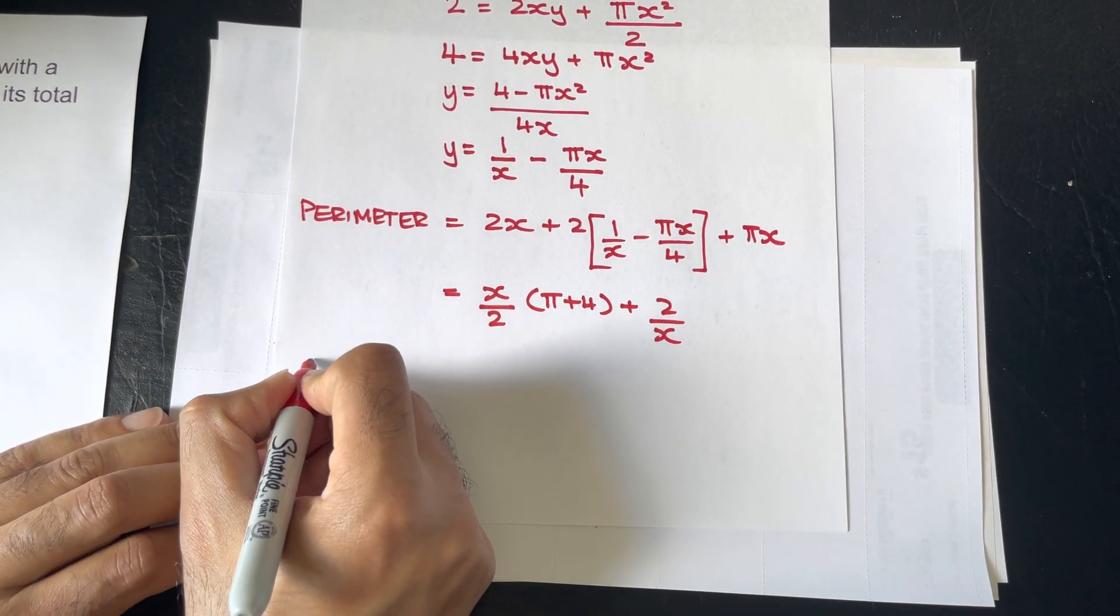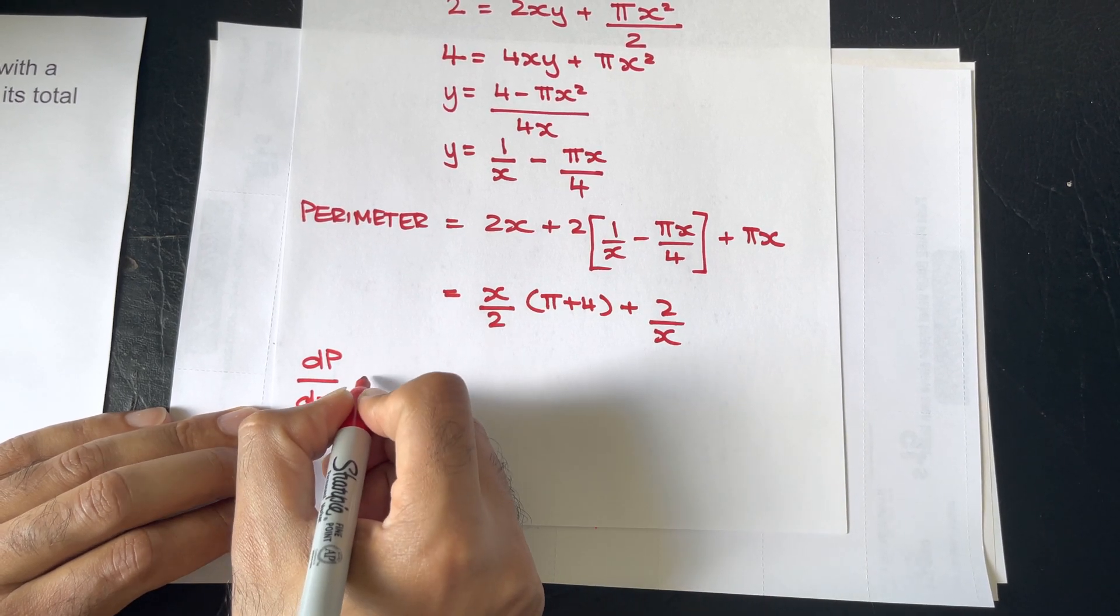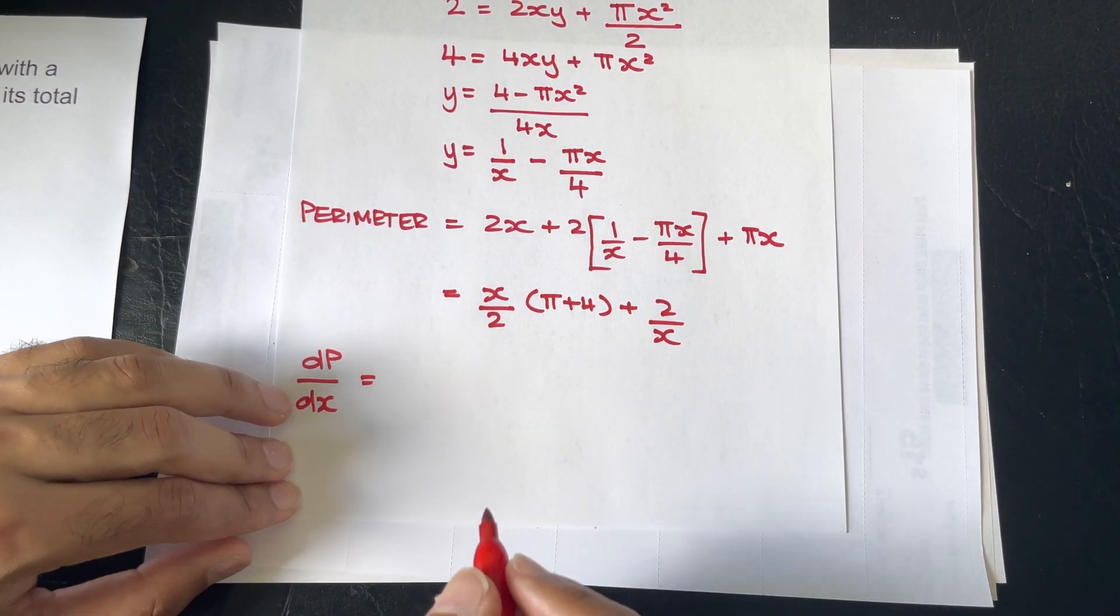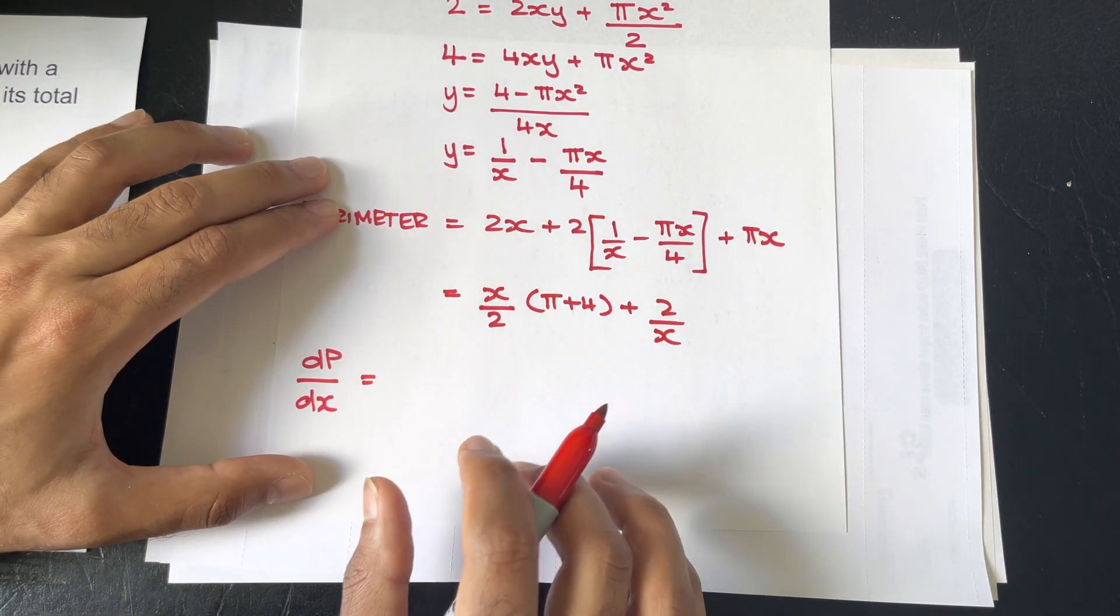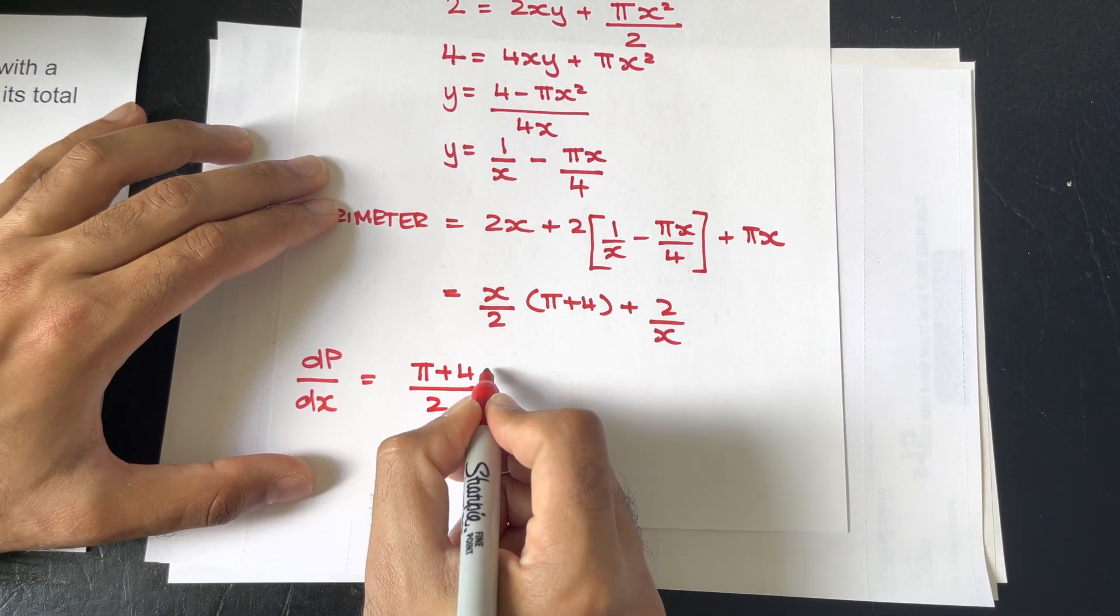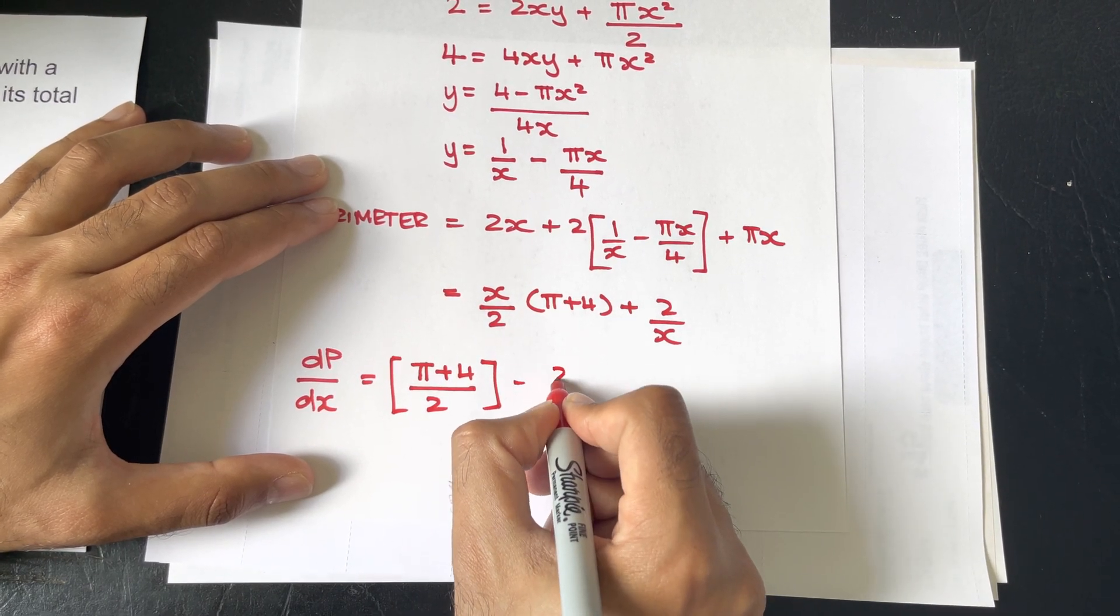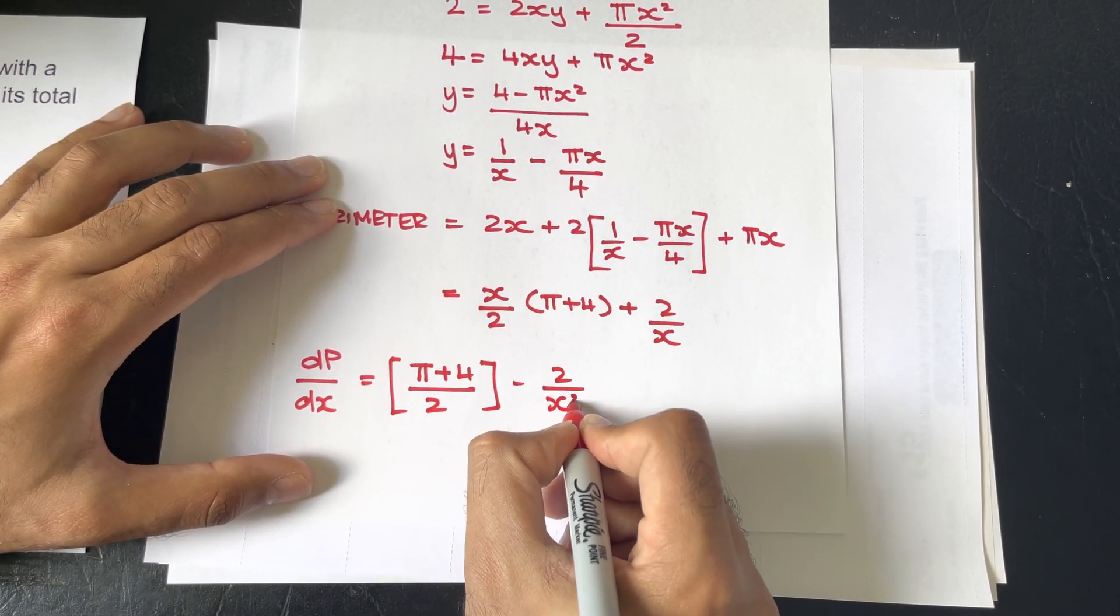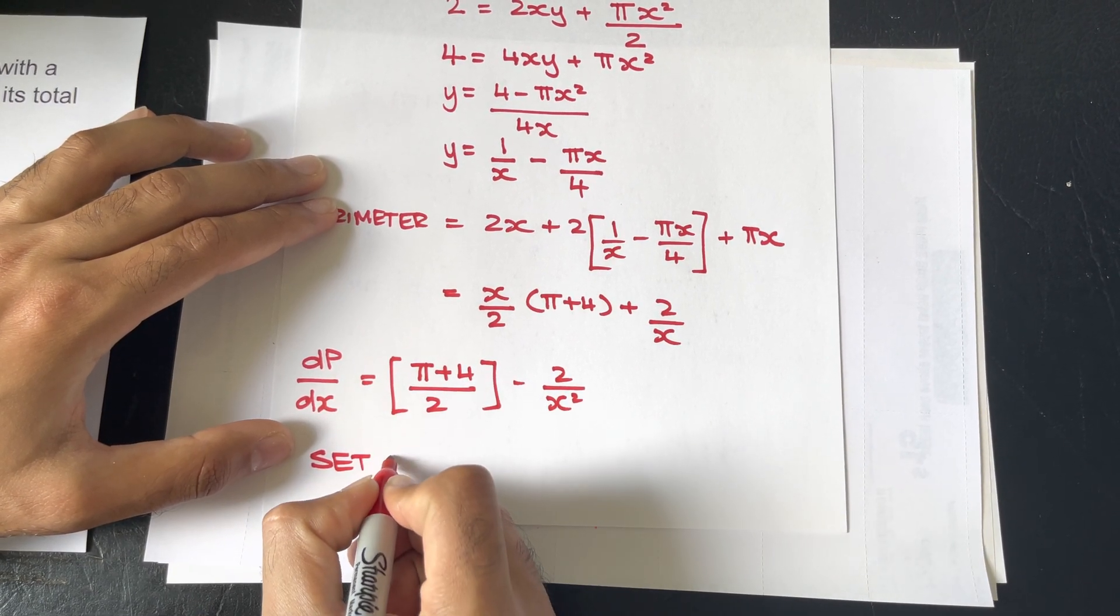So, the derivative of the perimeter function with respect to x, it's very easy, this one. You're going to be left with π plus 4 divided by 2 minus 2x squared. We're going to set this to 0.